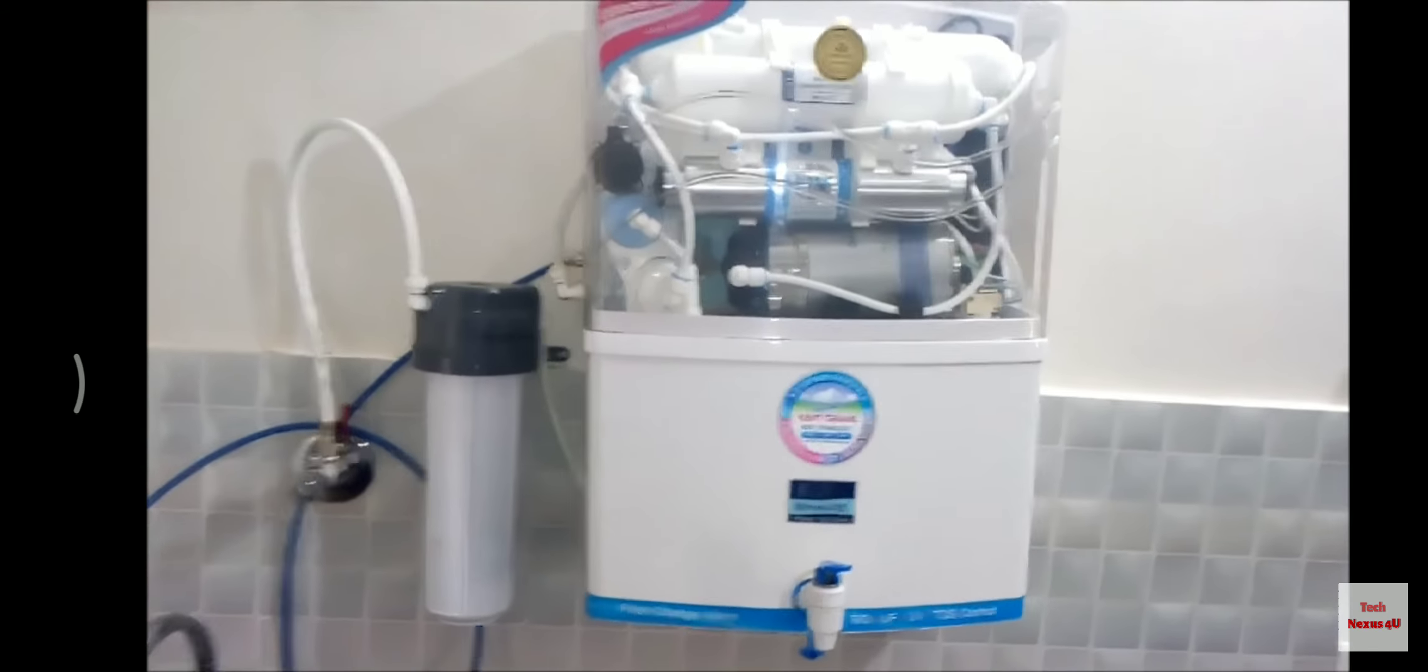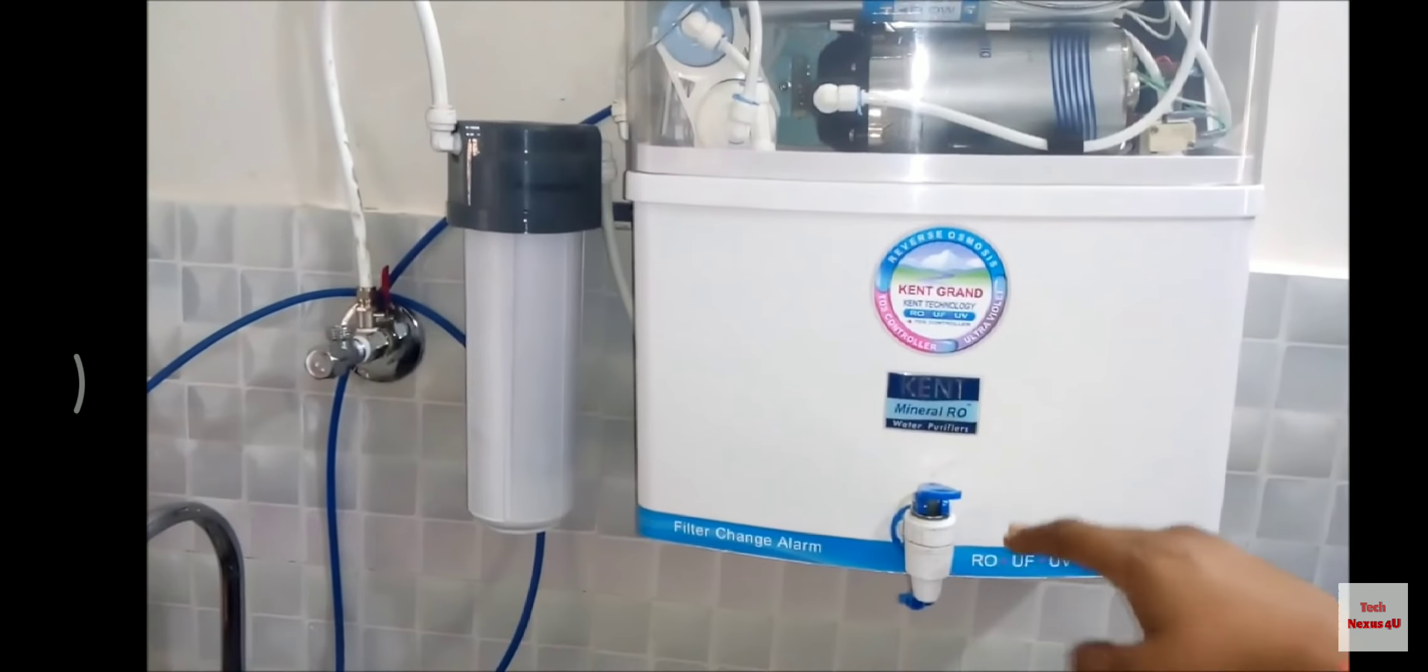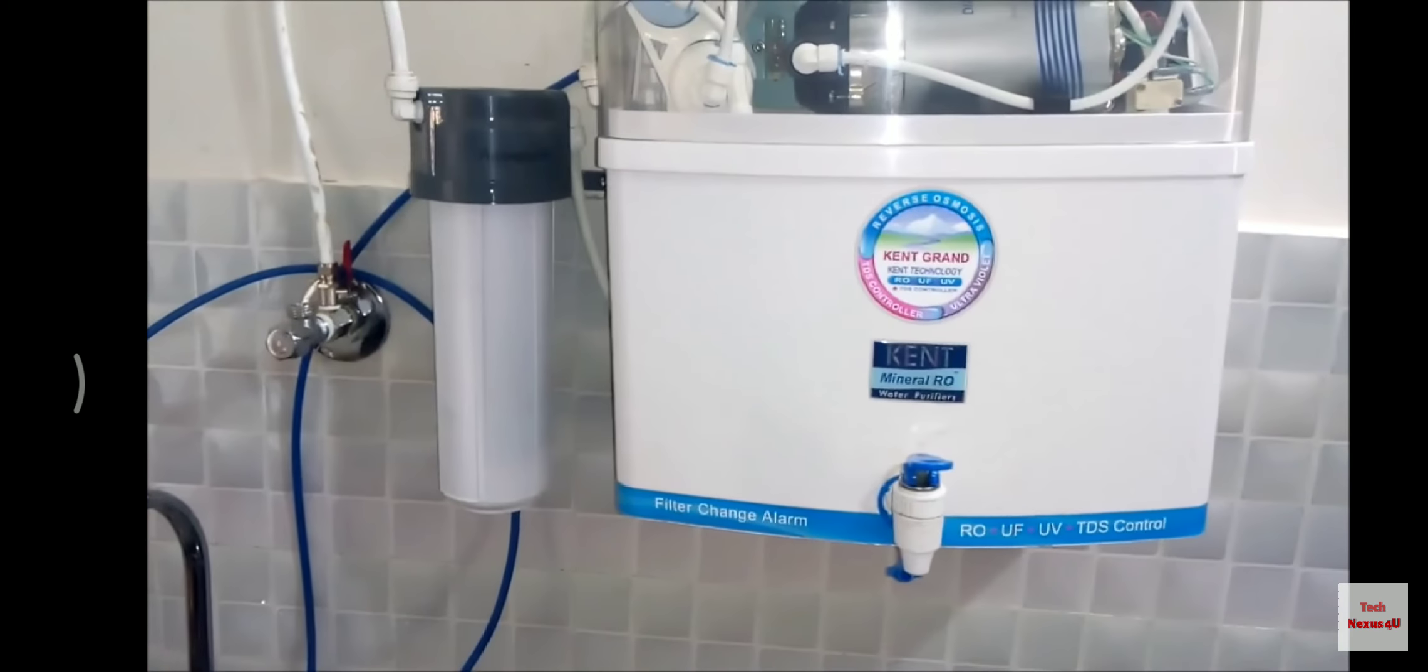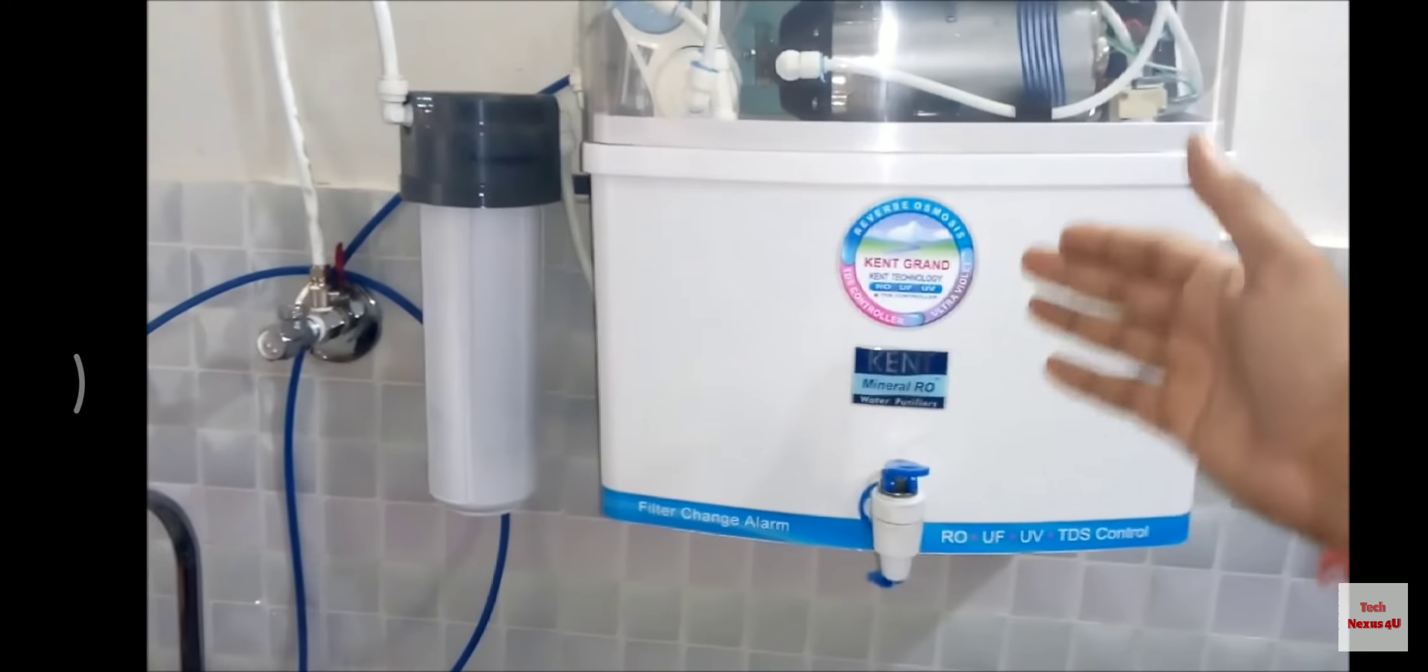First of all, drain the container. Let the water flow out so that the previous TDS water will come out. We call it flushing or crossover.